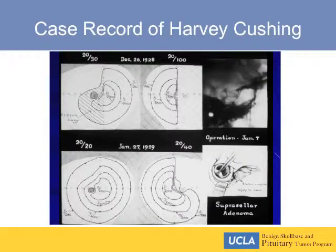This is from Harvey Cushing's notes. You can see a case that he analyzed in 1928 with a bitemporal deficit. He demonstrated that after his surgery the visual fields had improved and the acuity had improved.